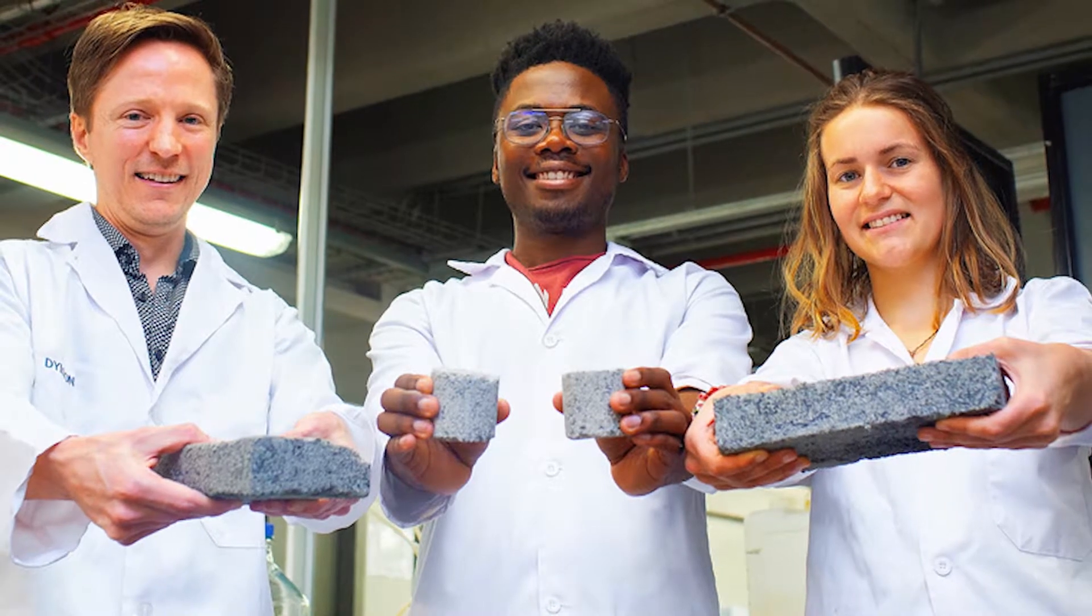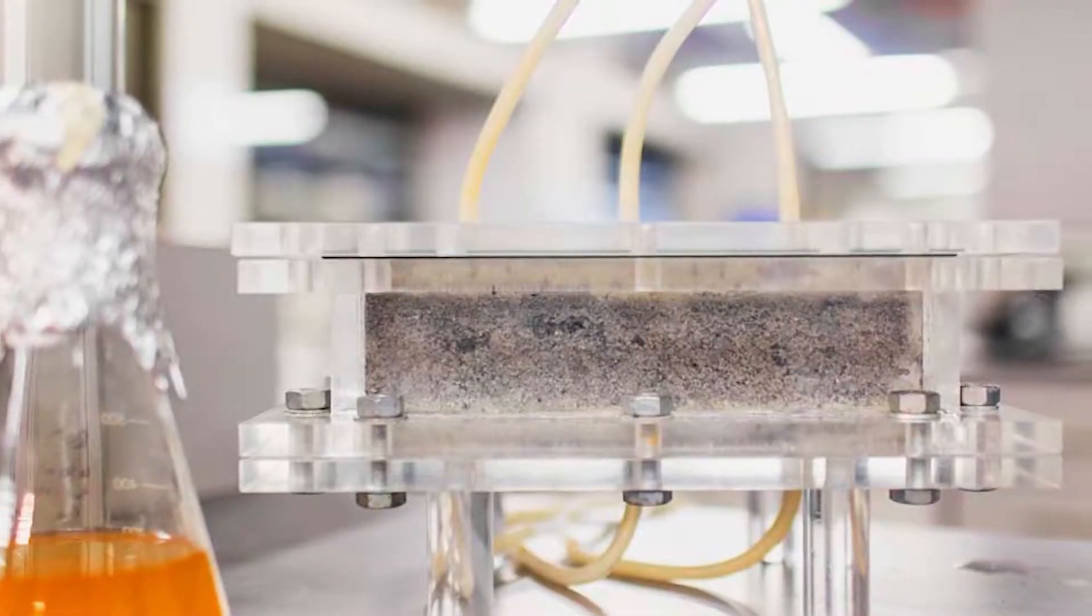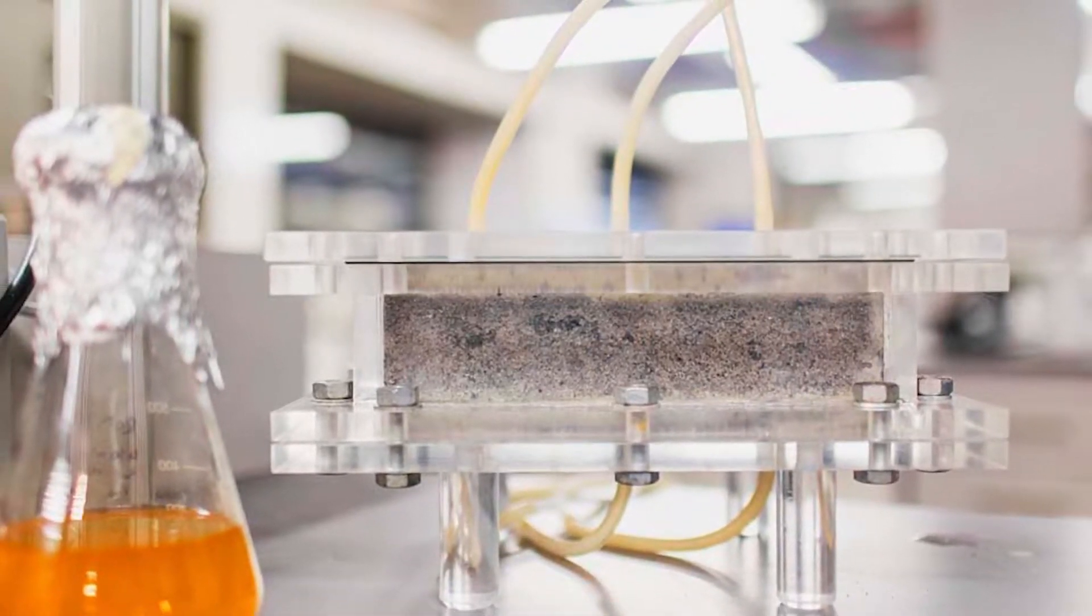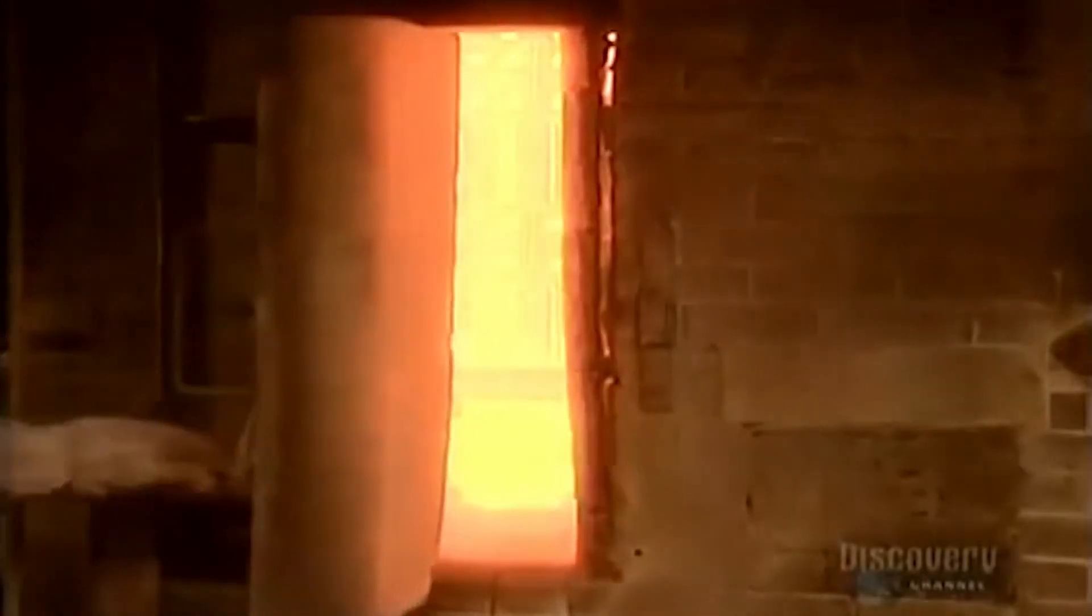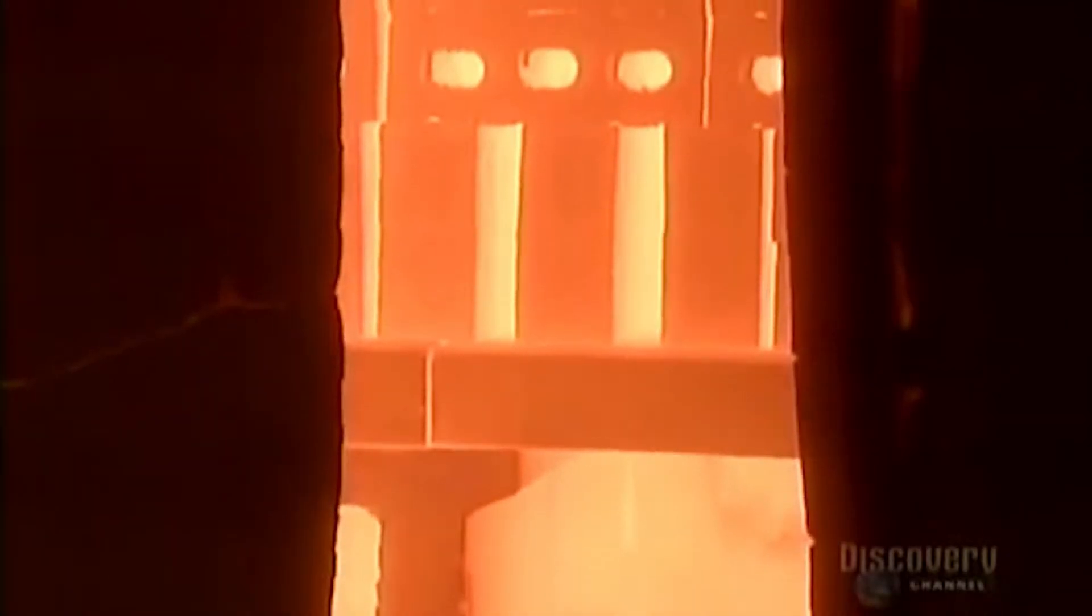The bricks are created using microbial carbonate precipitation, a process similar to the way that seashells are formed. The biobricks could also be a waste recovery solution that is more efficient. Traditional bricks have to be baked in a kiln at about 1400 degrees C. The biobricks are created in room temperature molds.